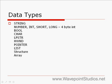Here are the data types in InstallScript. We have string, number, int, short, long, which is a 4-byte int. We have bool, boolean, char, LPSTR, handle to a window, pointer, list, structure, and array.